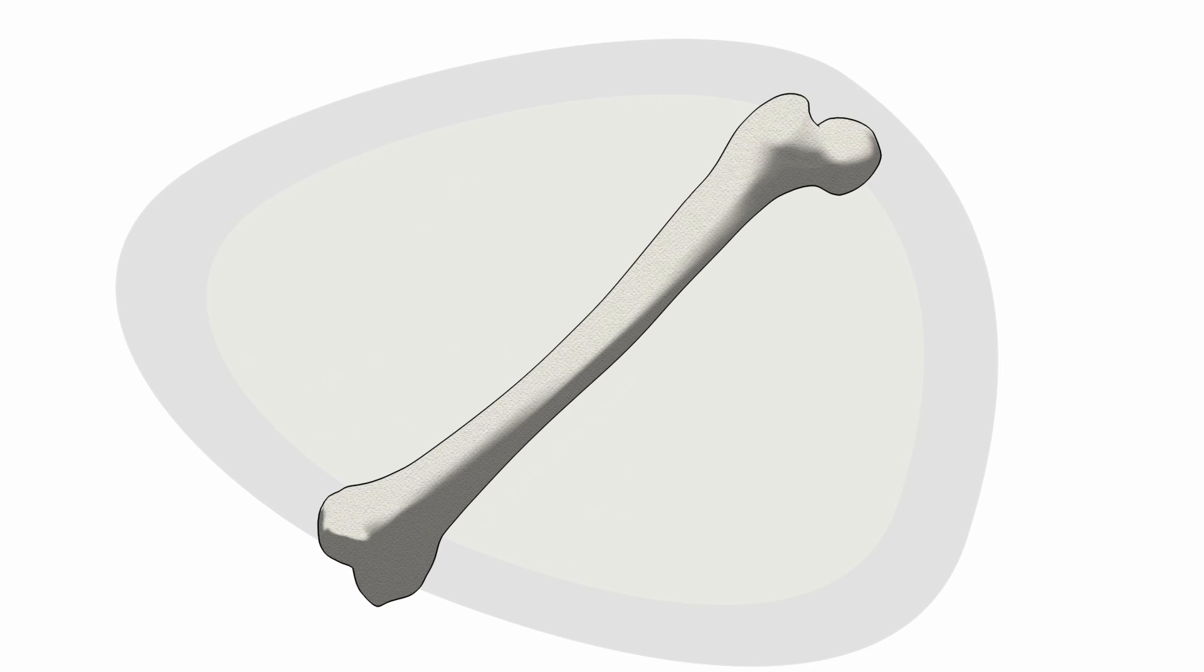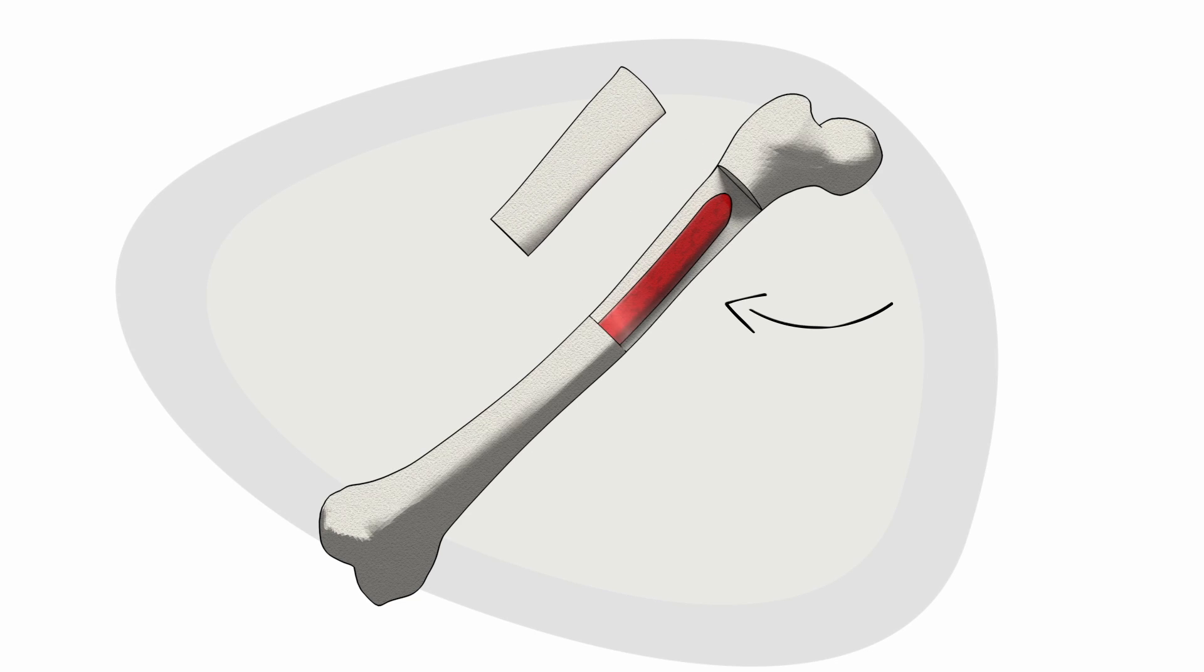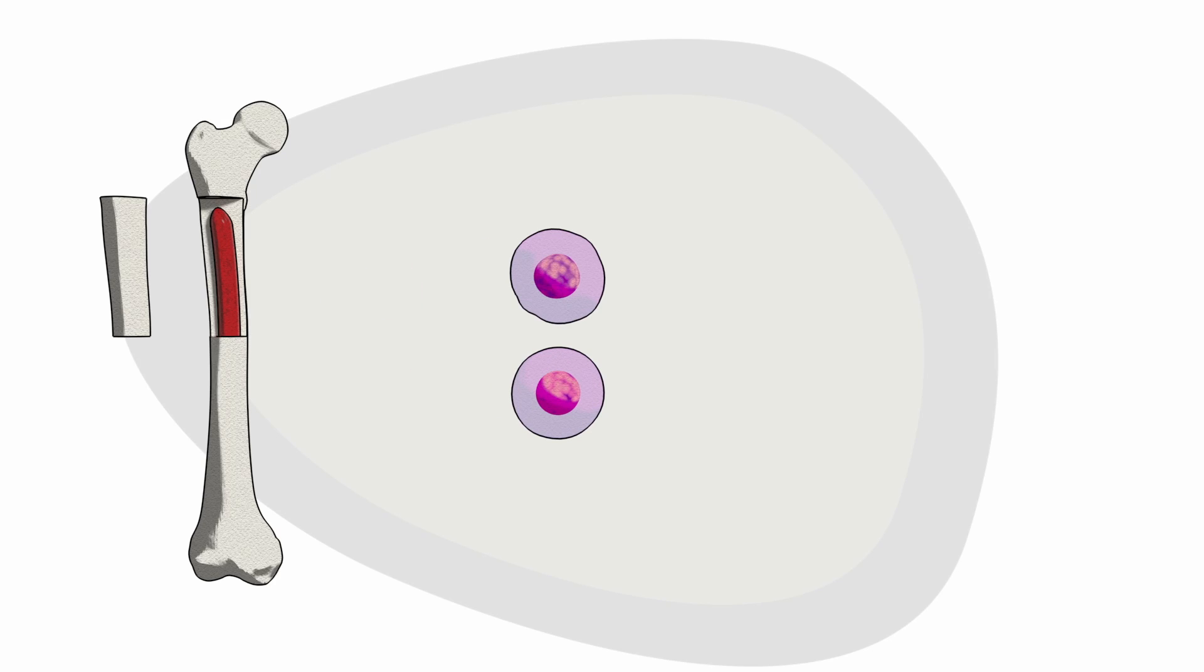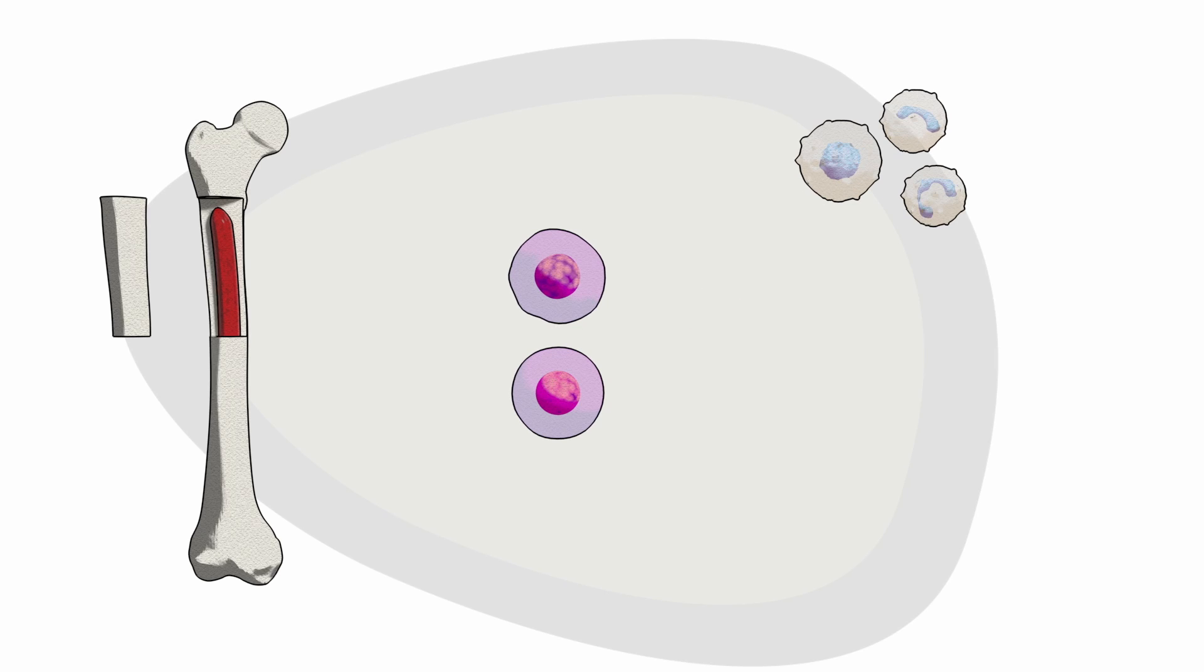CLL is a type of blood cancer that starts in the bone marrow. Bone marrow is the soft inner part of the bone where stem cells and three main types of blood cells are formed: white blood cells, red blood cells, and platelets.